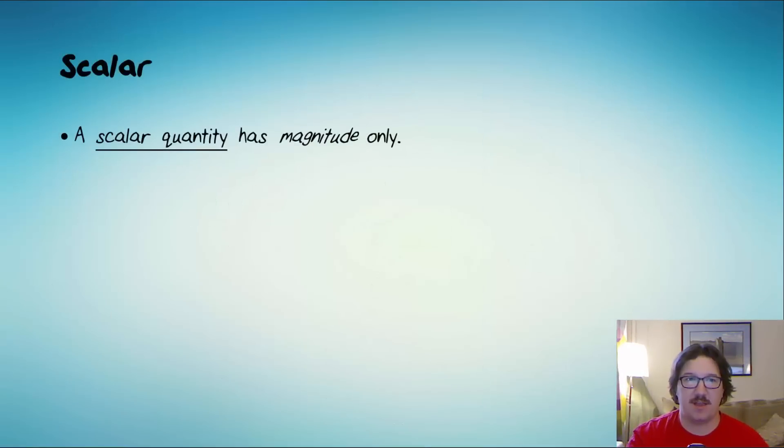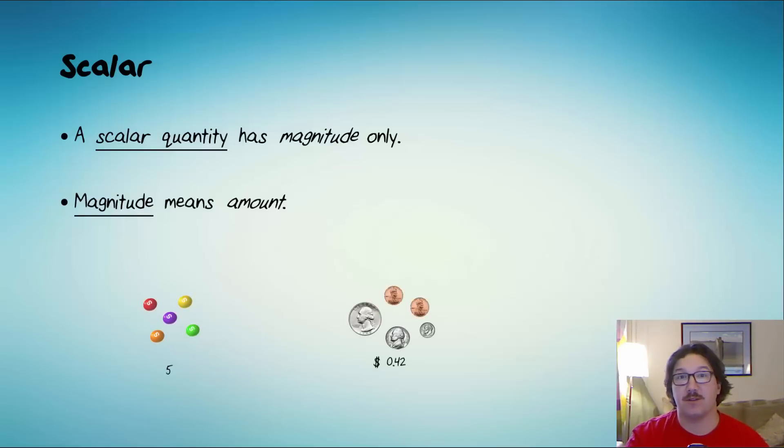And so to define scalars, we'll say that a scalar quantity has magnitude only. And magnitude means amount. So we talk about an amount of Skittles that you have or an amount of money that you have. Those are scalars.